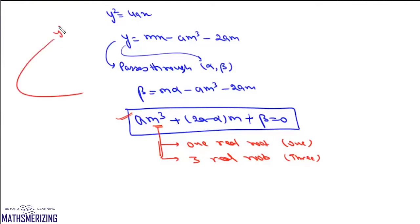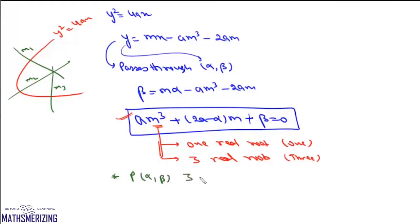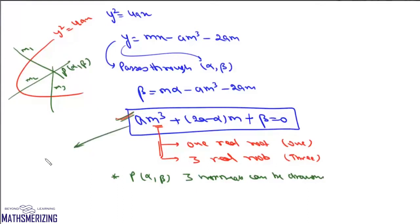So suppose we have this parabola y² = 4ax. Then from certain points, we can draw three normals to this parabola whose slopes are m1, m2, and m3. Let us consider a question where from point (α, β) three normals can be drawn. So if three normals can be drawn from point P(α, β), we know that its cubic equation will be am³ + (2a - α)m + β = 0, and this equation will have three real roots m1, m2, and m3.